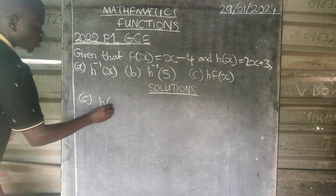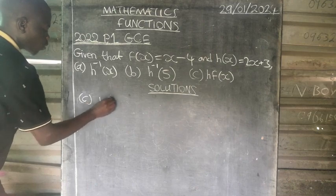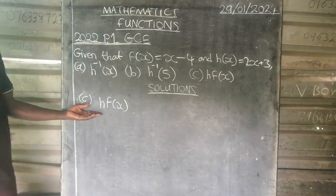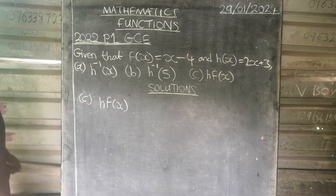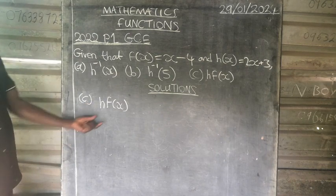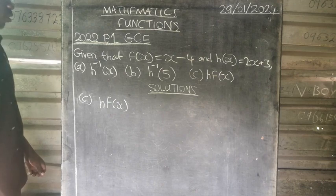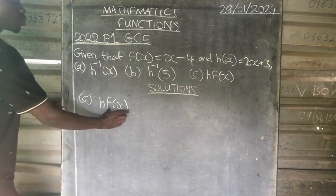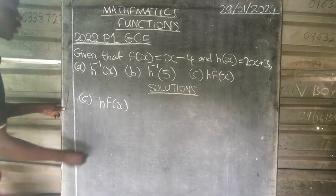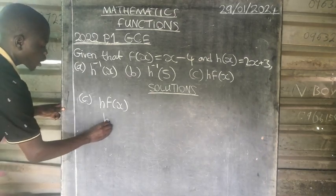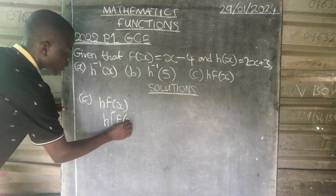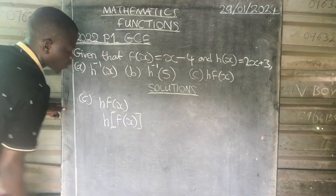So Part C, h of f of x. Now this is a composite function where we are required to combine the two functions. We have to combine the two functions where f of x is going to be treated as the domain.